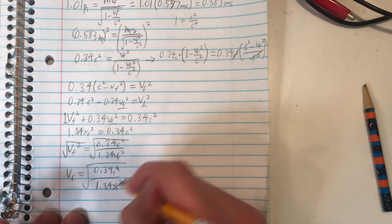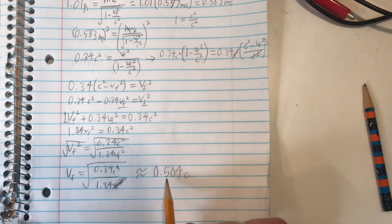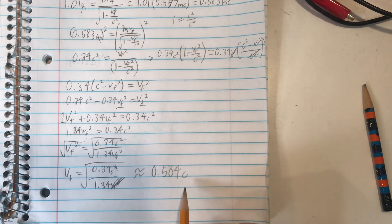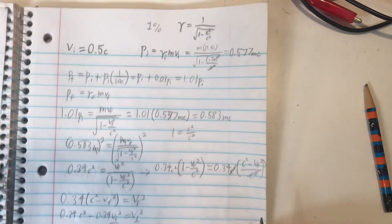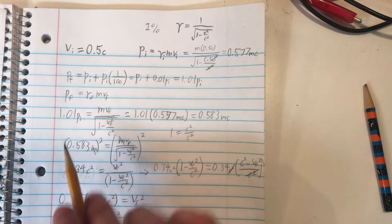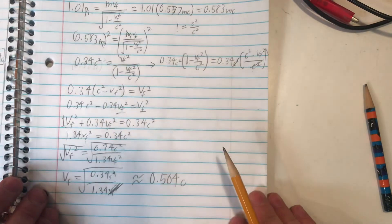And I didn't mean to write that there, ignore that. And that gives us that value. So our speed in terms of c is 0.504 c. And if you want to do this for other percentages, you can plug in other values for this part right here and follow the same method, and you'll get the answer.